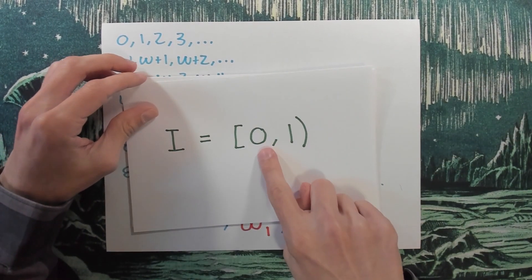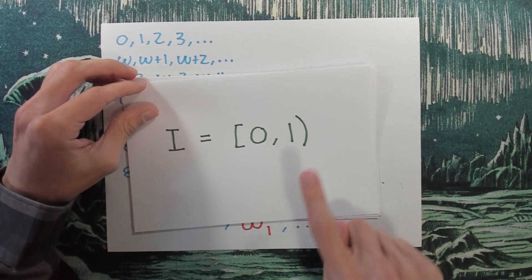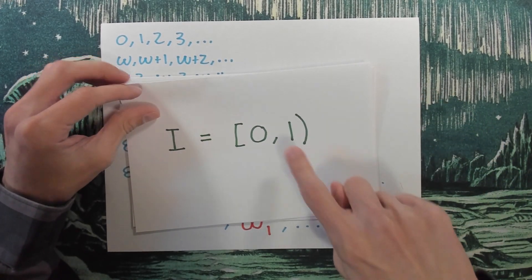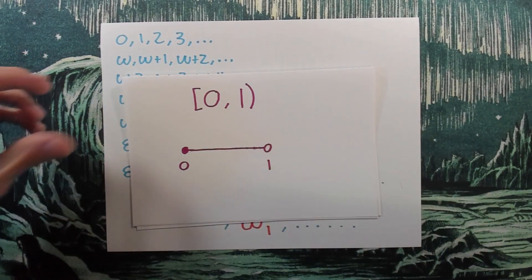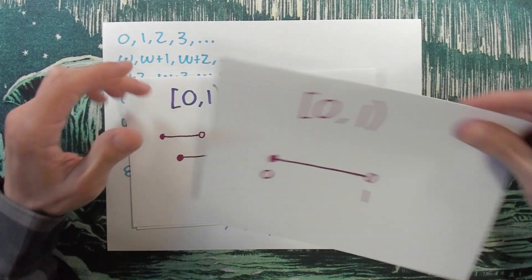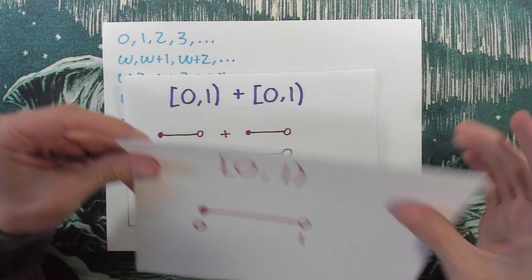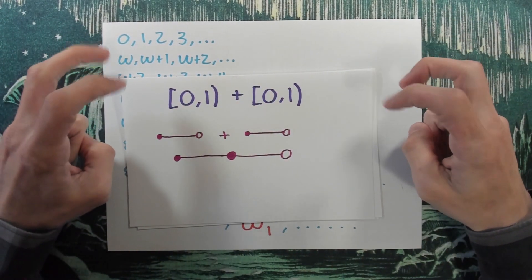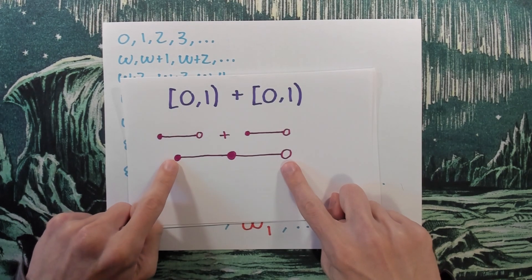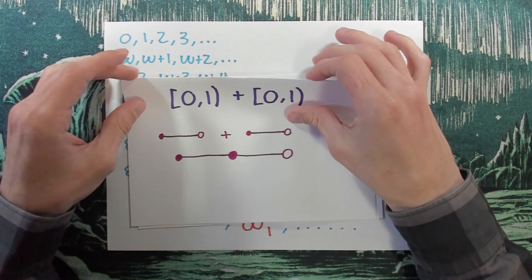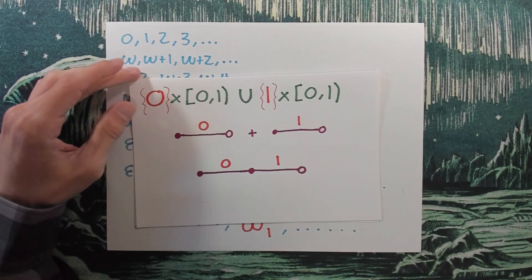Let's start with the simple interval from 0 to 1, and I'm not including the 1 — it's just to make things work out. So there's our favorite interval. And what I could do is take two of them and sort of add them together to get a longer interval. But this doesn't really make a lot of sense; we have to be clear about what we're talking about.